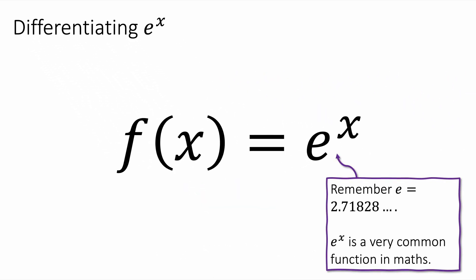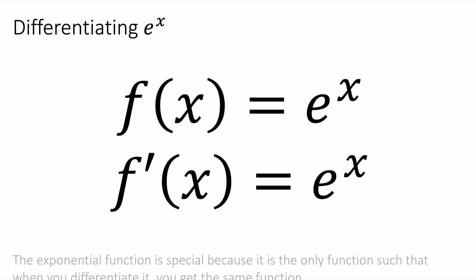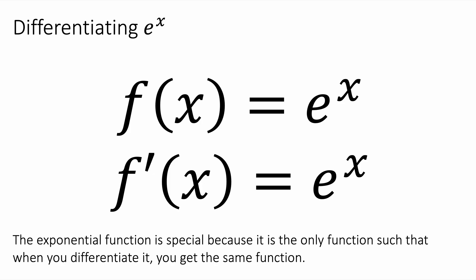The function e to the power x is a very common function in mathematics. Just remember the number e is about 2.71828. It's an irrational number, but it is very common. And it's very interesting because when you differentiate e to the power x, you get the same thing - e to the power x again. It's the only type of function where if you differentiate it, you get the same thing. The exponential function is very special because it is the only function that differentiates to be itself.